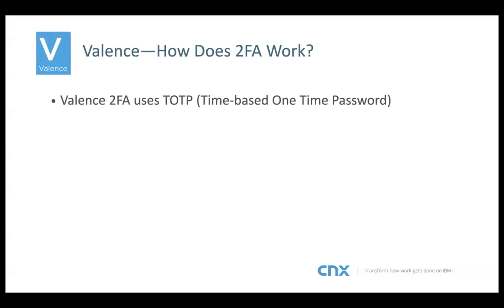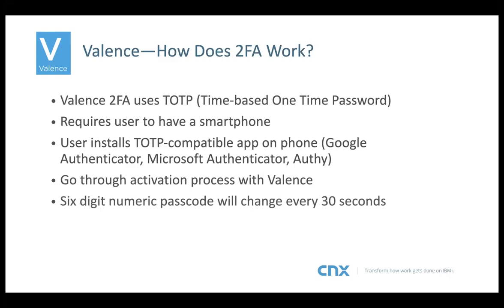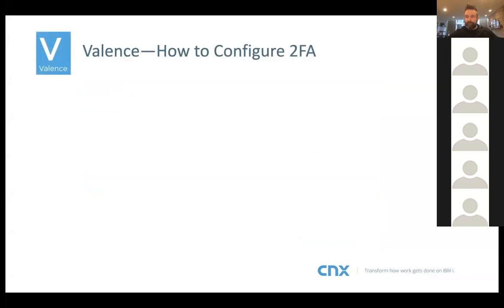Valence uses a two-factor authentication type called TOTP — a time-based one-time password. It requires the user to have a smartphone with a TOTP-compatible app installed. There are many apps that could be used; we use Google Authenticator at CNX, but you could also use Microsoft Authenticator, Authy, and others. The user goes through an activation process, and then a six-digit numeric passcode changes every 30 seconds within the app. If you want to learn more about TOTP, you can go to Wikipedia.